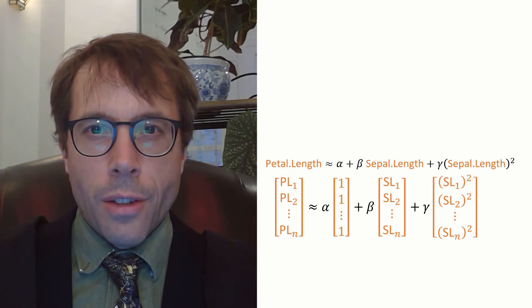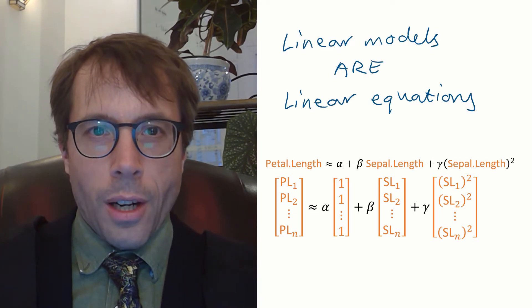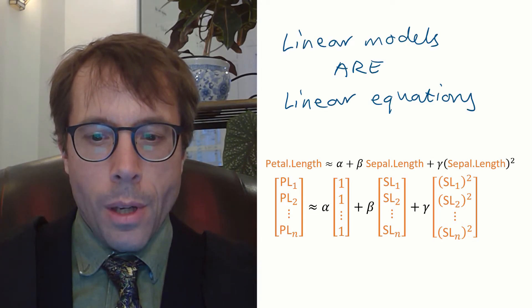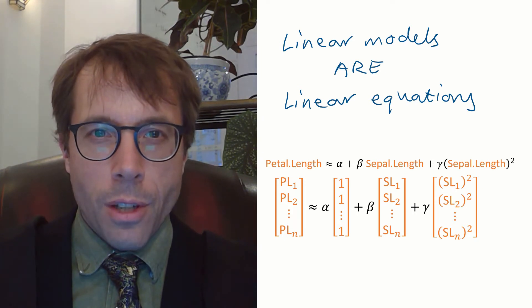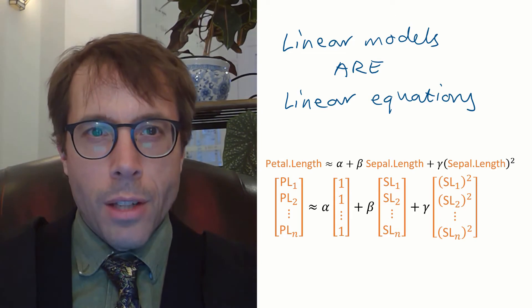The point is linear doesn't mean straight line plots, it means linear algebra. Linear models are linear equations. We could say they're linear in the data. They're equations about vectors and each vector is a column in the dataset.